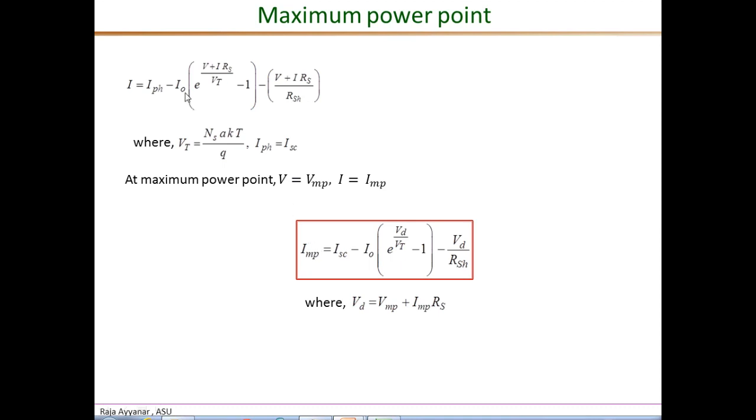In this expression, I is I-MP, the I photon is always the short circuit current I-SC, minus I-O, e to the, this term is the diode voltage V-D, over V-T minus 1, and again the same diode voltage divided by the R shunt to get the shunt resistance current. In this equation, V-D is the diode voltage, is the external voltage, which now is V-MP, plus current times Rs, so I-MP times Rs.